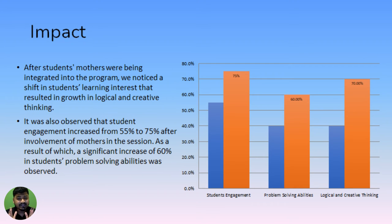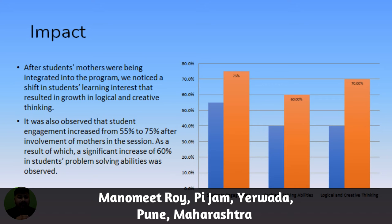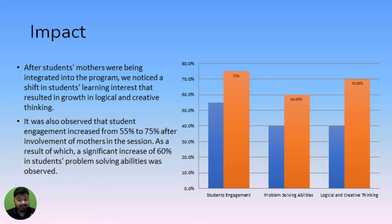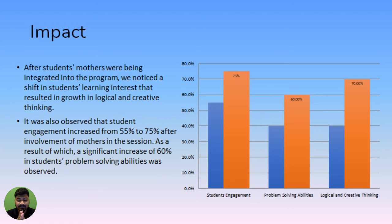If we look at the impact graph, the impact is categorized into three buckets. First one is the students' engagement. Second one is problem solving abilities. And third one is logical and creative thinking. After students' mothers were being integrated into the program, we noticed a shift in students' learning interest that resulted in growth in logical and creative thinking. It was also observed that students' engagement increased from 55% to 75% after involvement of mothers in the session. As a result, a significant increase of 60% in students' problem solving ability was observed.